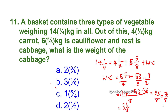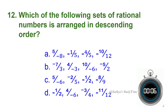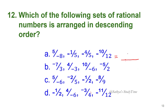Twelfth question: Which of the following sets of rational numbers is arranged in descending order? Your time starts now. For these types of questions, find the LCM to get a common denominator, then compare numerators to identify ascending or descending order. The answer is option D.